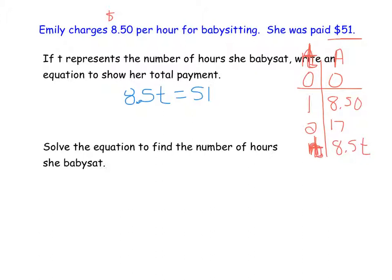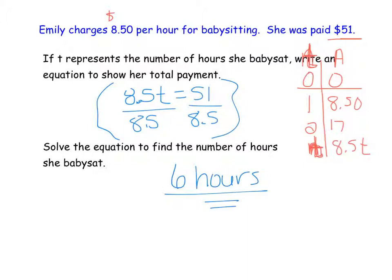And to solve, it's multiplied, so we're going to divide. And 51 divided by 8.5 is 6 hours. So first, don't forget your label. Second, make sure you're showing how you're solving this, and then make sure that you plug it back in to check your answers.